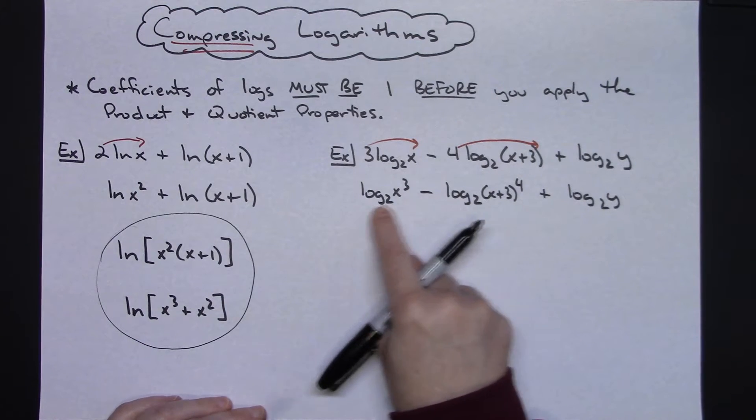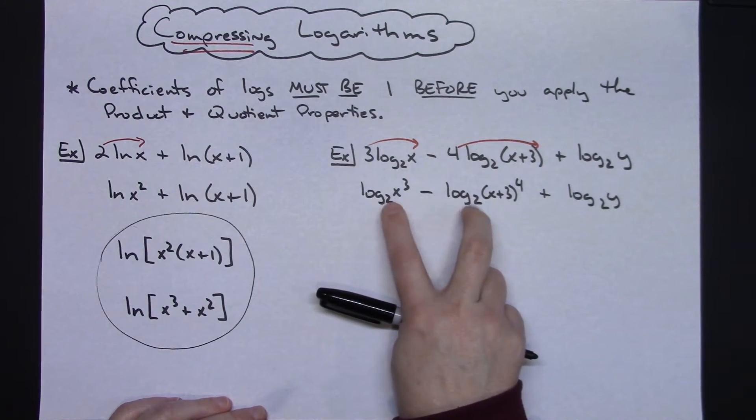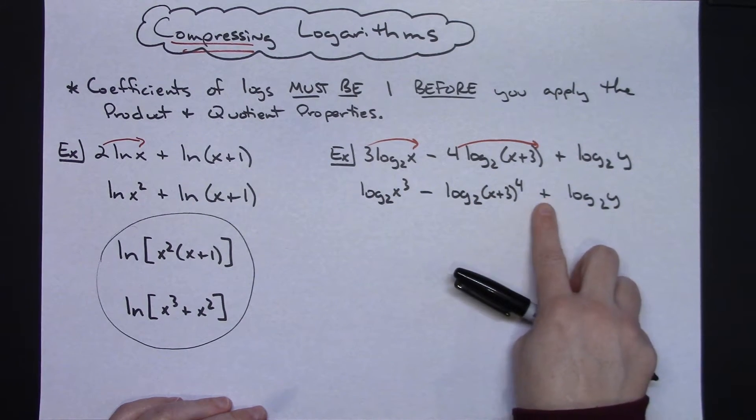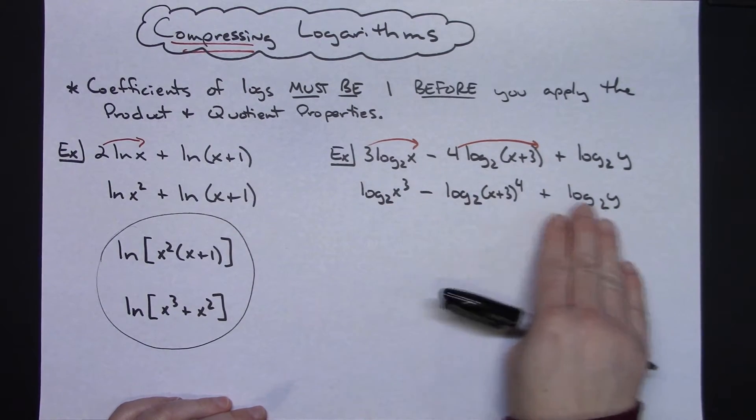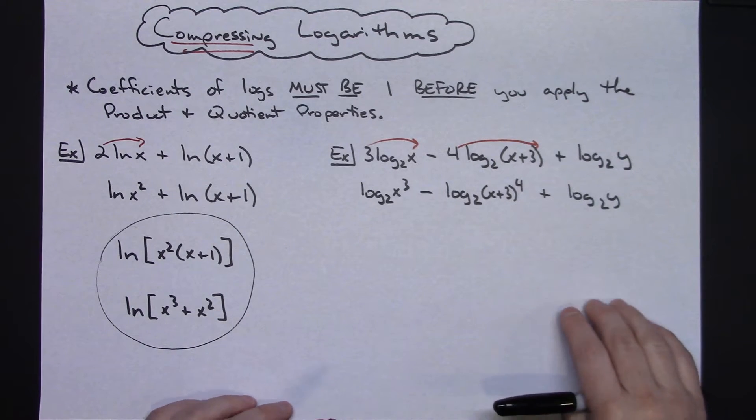Now going through and looking at product and quotient properties here, this right here subtracting means that I could divide these two, but then I would have to multiply by that. Since you can take terms that are being added and subtracted and rearrange the terms in any way you want, I would recommend doing the minus this log right here moving it to the end so that I don't have to deal with that quotient until the very end.